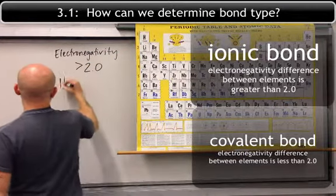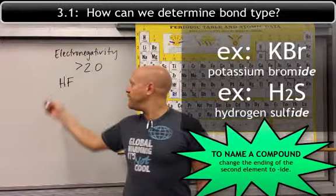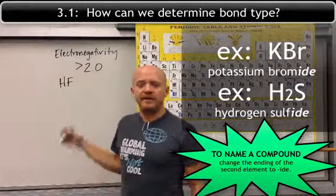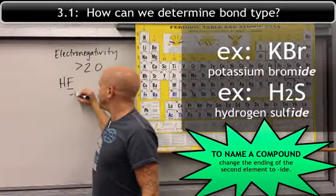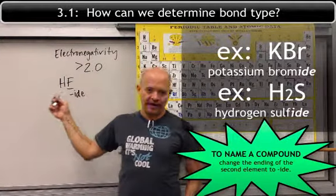we're going to choose HF, or hydrogen fluoride. This is how it was named: you just take the second compound, drop the letter ending, and change it to -ide, making it hydrogen fluoride.